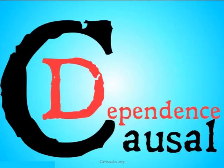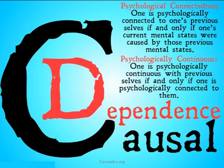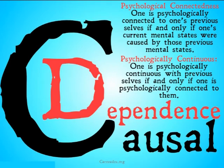There's also the causal dependence criterion. This is a little more complicated, but as we'll see in the objections, it avoids some of the problems of the memory criterion. The causal dependence criterion says one is psychologically connected to one's previous selves if and only if one's current mental states were caused by those previous mental states. In order to be identical to something according to the causal dependence criterion, you have to be psychologically connected to it and psychologically continuous with something. One is psychologically continuous with one's previous selves if and only if one is psychologically connected to them — connected to all those previous selves in a causal dependent string. Basically, your mental states from before have to have caused your current mental states in an important way.